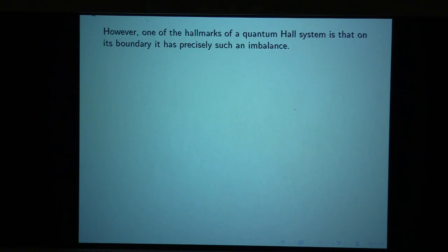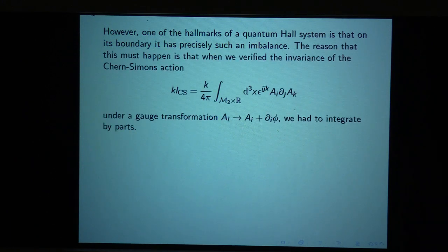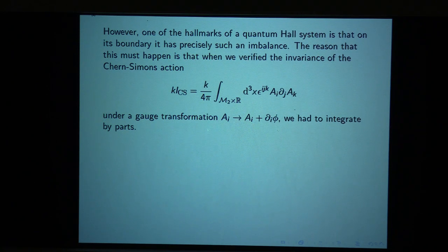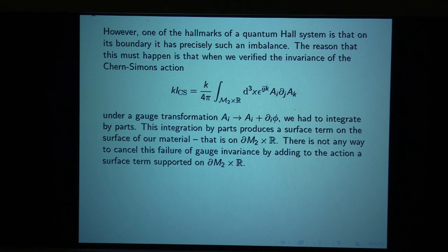However, one of the hallmarks of a quantum Hall system is that on the boundary, it has precisely such an imbalance. The reason this must happen from our macroscopic point of view is that when we verify the invariance of the Chern-Simons action under a gauge transformation, even a simple single-valued gauge transformation requires integration by parts. So when a sample has a boundary, the integration by parts produces a surface term, and the Chern-Simons term is not gauge invariant.